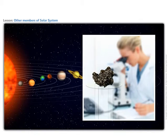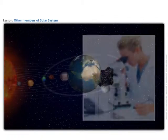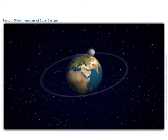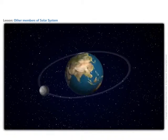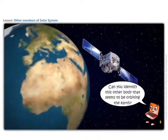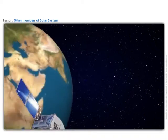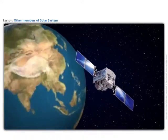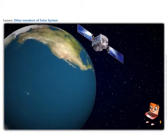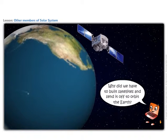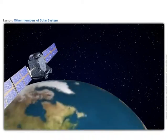Recall that the moon is a satellite that orbits the Earth. Can you identify this other body that seems to be orbiting the Earth? Yes, these are also satellites, but man-made or artificial. Why did we have to build satellites and send them off to orbit the Earth?